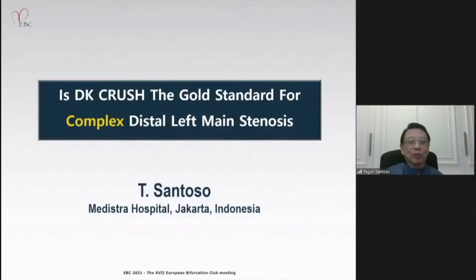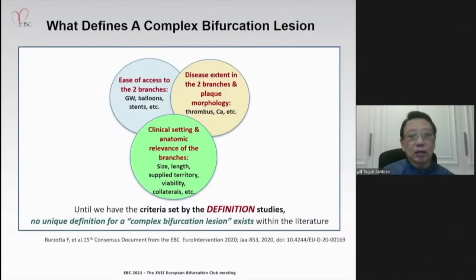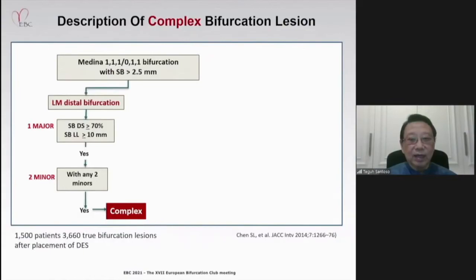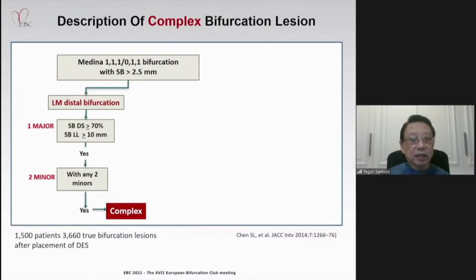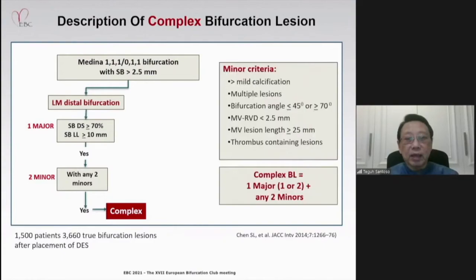Many factors may define the complexity of a bifurcation lesion. Until we have the criteria set by the DEFINITION studies, no unique definition for a complex bifurcation lesion exists. Within the DEFINITION study, led by Dr. Chen Shao-Liang, a complex left main distal bifurcation is defined by the presence of one major criterion: side branch diameter stenosis more than 70% and lesion length in the side branch more than 10 mm.